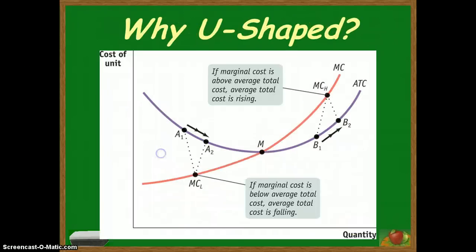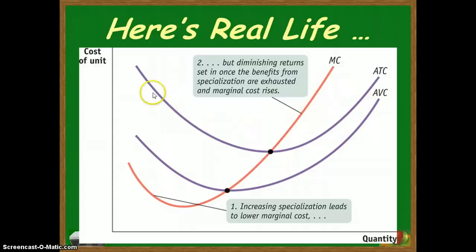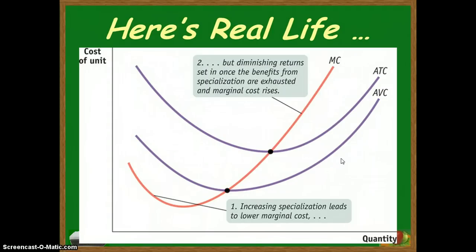For the purposes of this class, the cost curves look something like this, with the marginal cost swooshing like a Nike swoosh — there's an assumption that there are actually decreasing marginal costs initially with specialization, but eventually marginal costs go up. That marginal cost curve will go through the minimum of both the average total cost curve and the average variable cost curve. We'll do some more practice with these cost curves in the next couple of classes. Thanks for bearing through this, and I'll see you soon.